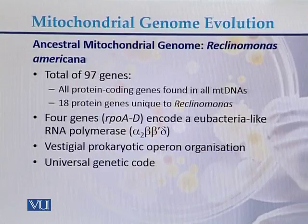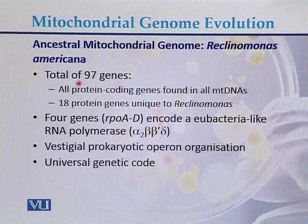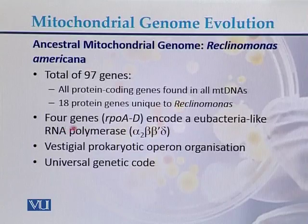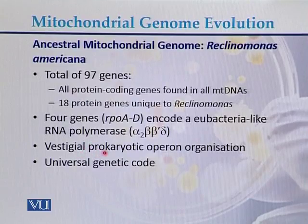Reclinomonas americana is considered the ancestral mitochondrial genome. Its mitochondrial genome has a total of 97 genes, and all protein-coding genes are found in the mitochondrial DNA. There are 18 protein genes unique to this species, four genes encoding a eubacteria-like RNA polymerase, vestigial prokaryotic operon organization, and a universal genetic code.